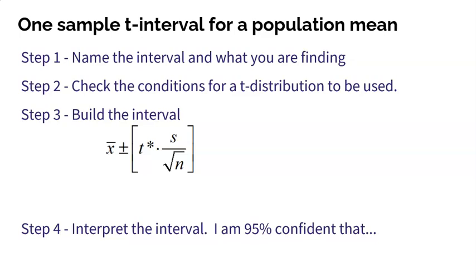Step three is to build the interval using this easy, awesome formula. X-bar is the statistic sample mean from our sample. t-star is our critical value based on how confident we want to be to determine how far we're willing to reach to create our interval. And then the s divided by the square root of n is the standard error of our sampling distribution.